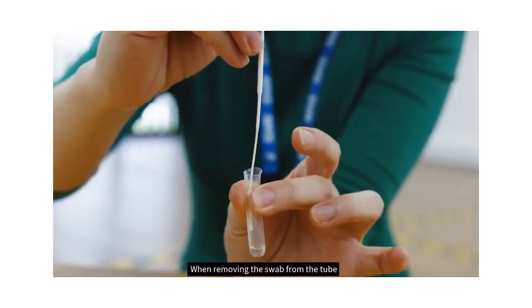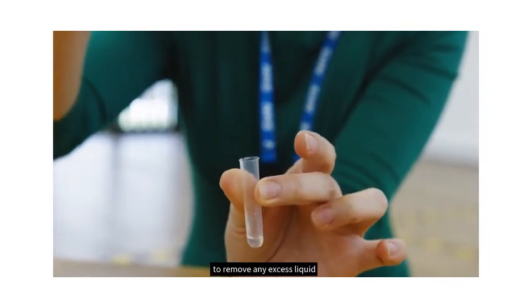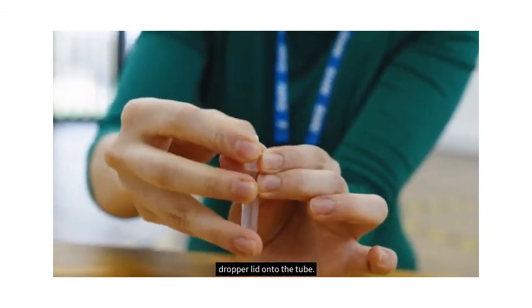When removing the swab from the tube, squeeze the flexible sides of the vial to remove any excess liquid. Put the used swab back into the packet it came in. Replace the dropper lid onto the tube.